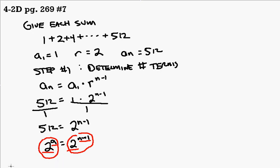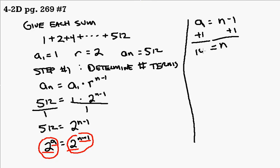So now we have, let's put this over here, now we have 9 is equal to n minus 1. If we simply add 1 to both sides of the equation, now we have n equals 10. So now we know there are 10 terms in our sum.